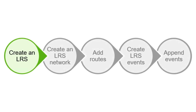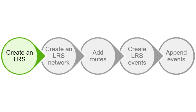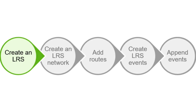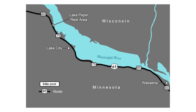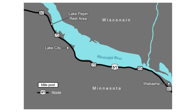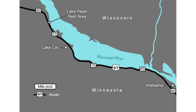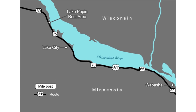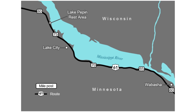ArcGIS Roads and Highways is a Linear Referencing System solution that enables transportation agencies to create and maintain a comprehensive view of their roadways by integrating data from multiple LRS networks.